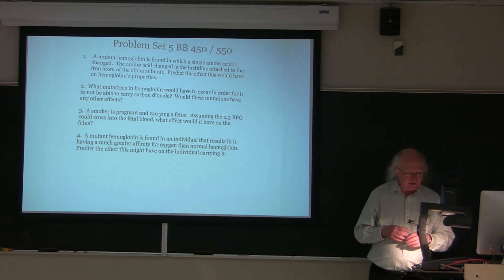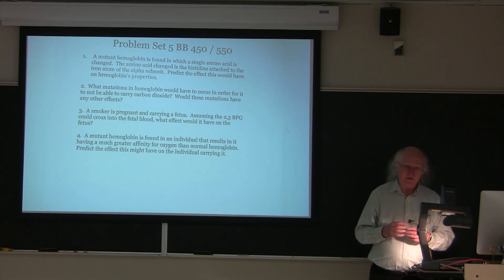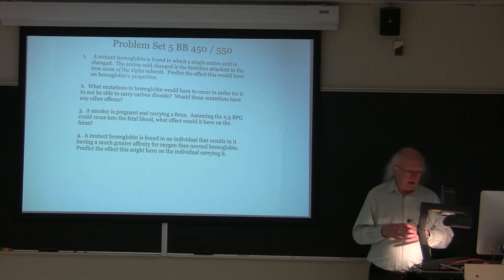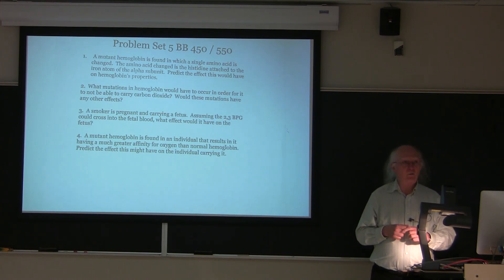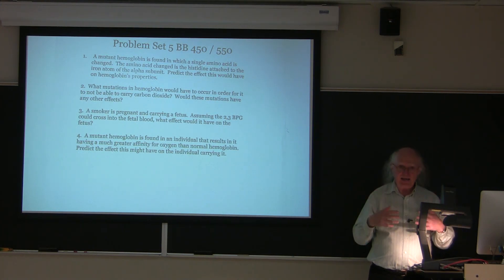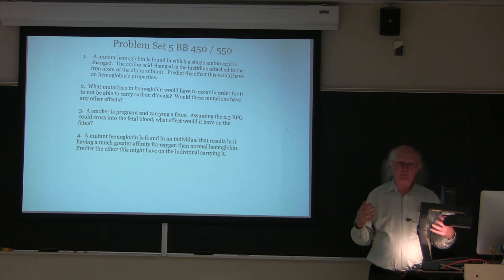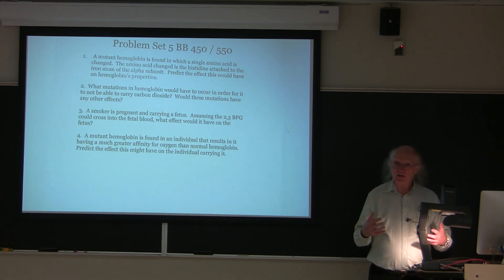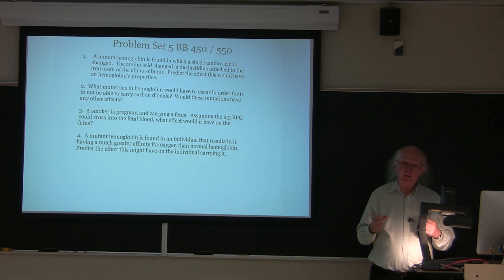Question number four says: a mutant hemoglobin is found in an individual that results in it having a much greater affinity for oxygen than normal hemoglobin. Predict the effect this might have on the individual carrying it. We can think of this a bit like fetal hemoglobin, which has a greater affinity for oxygen than adult hemoglobin so it can take oxygen away from the mother. If I had a hemoglobin with higher affinity for oxygen, I would probably have more difficulty with exercise, because the higher affinity hemoglobin would not be as inclined to release oxygen at the places where it was needed.